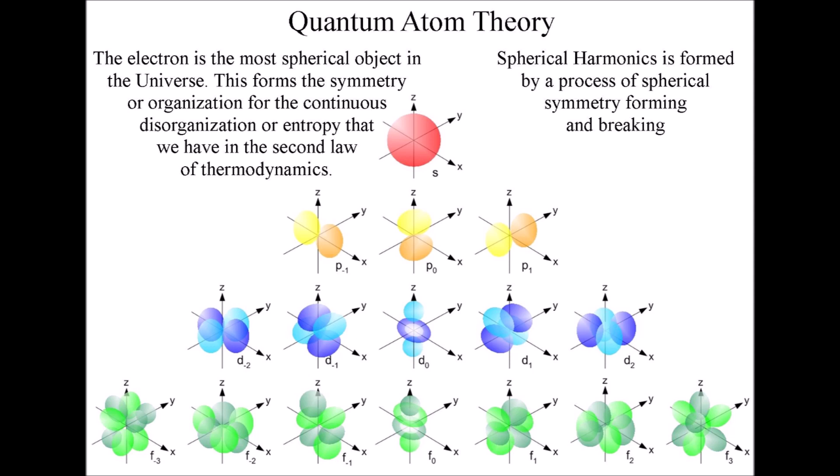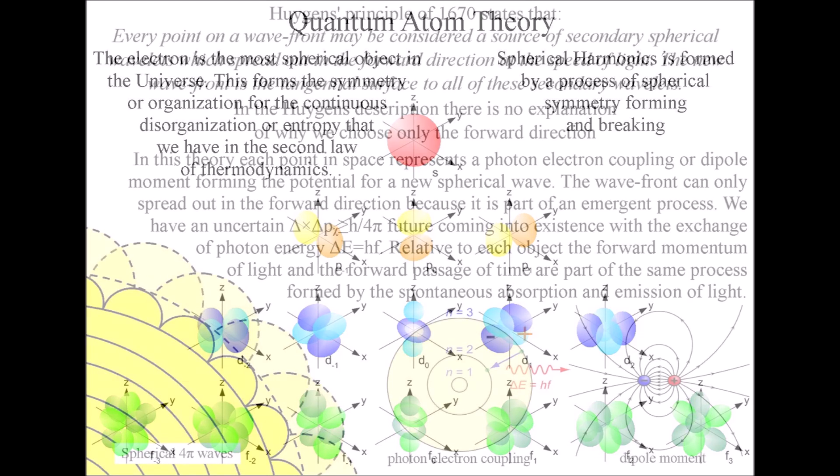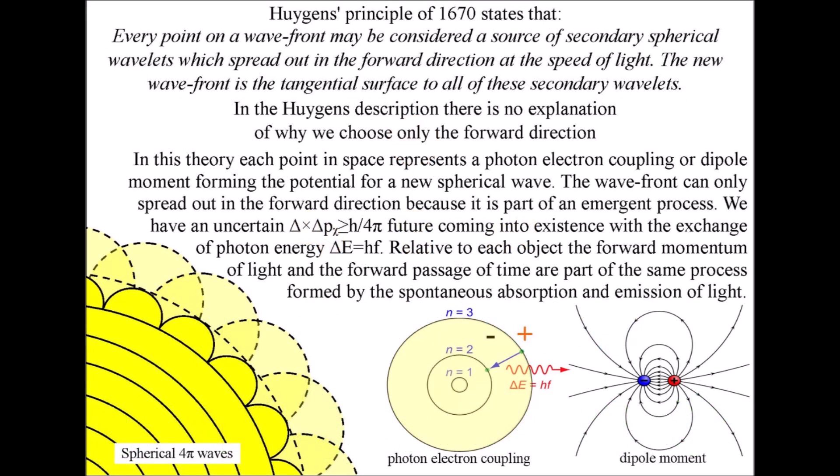Photon spherical oscillations form a probabilistic future in three dimensions with one variable in the form of time.